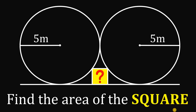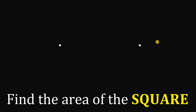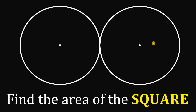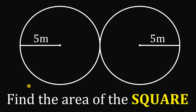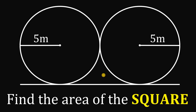For today's video we will answer a geometry challenge given by one of our followers. Given two points, let's draw two congruent circles with a radius of 5 meters. From here, let's draw a segment that is tangent to both circles, and then draw a square between these two circles that is also tangent to this segment. The question is: what is the area of the square?